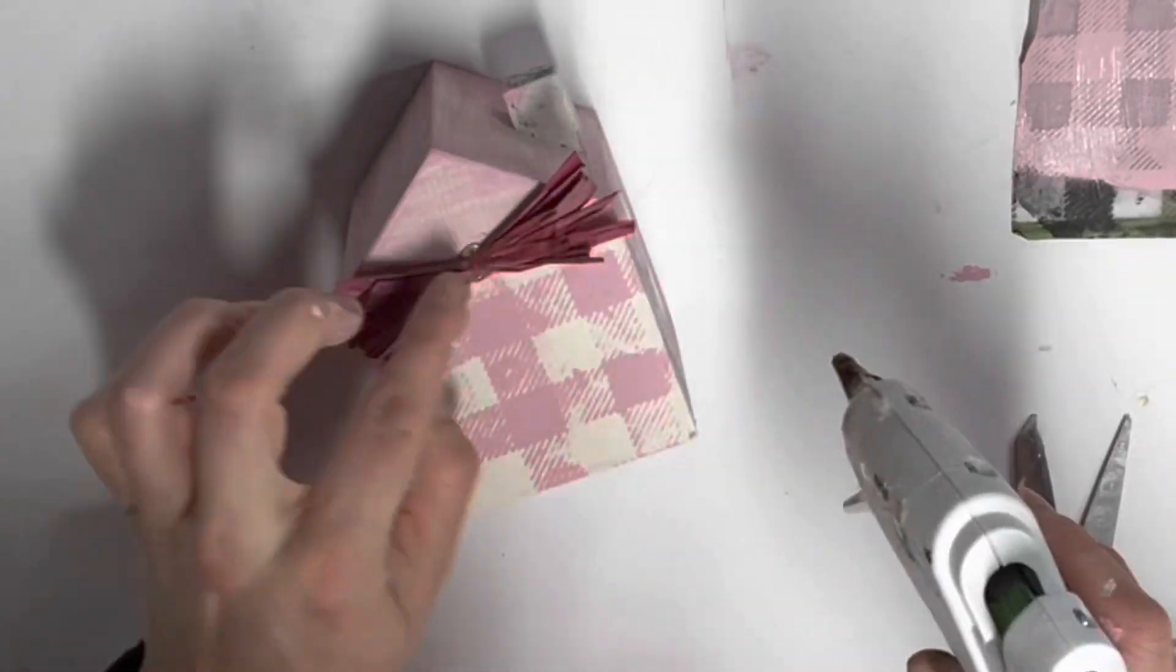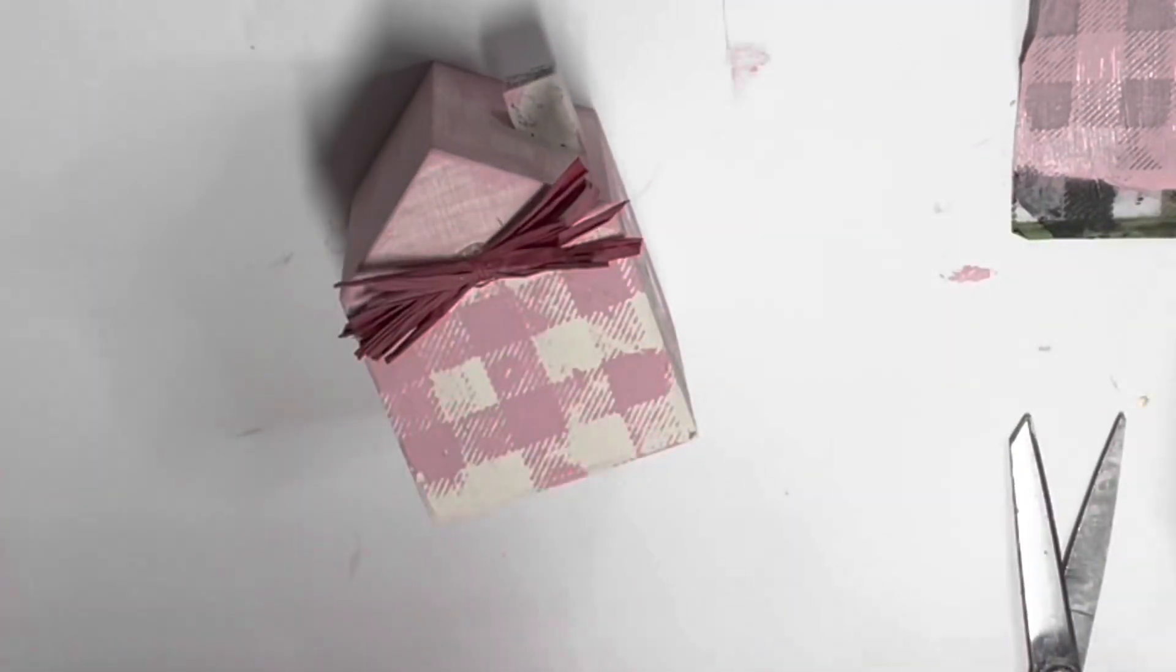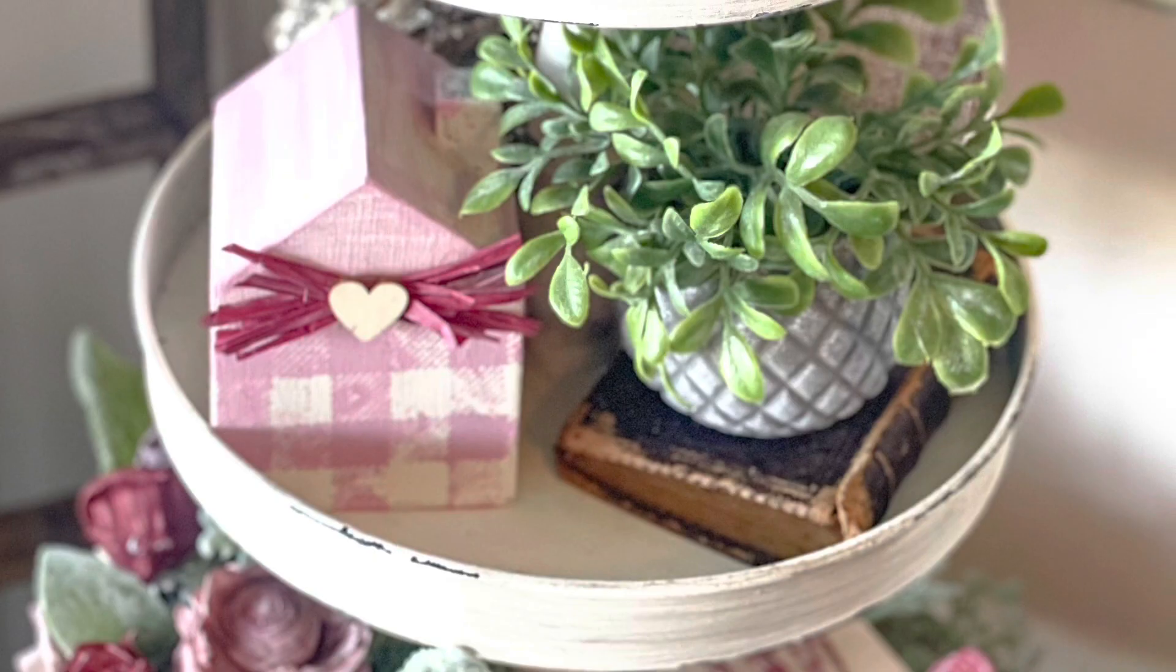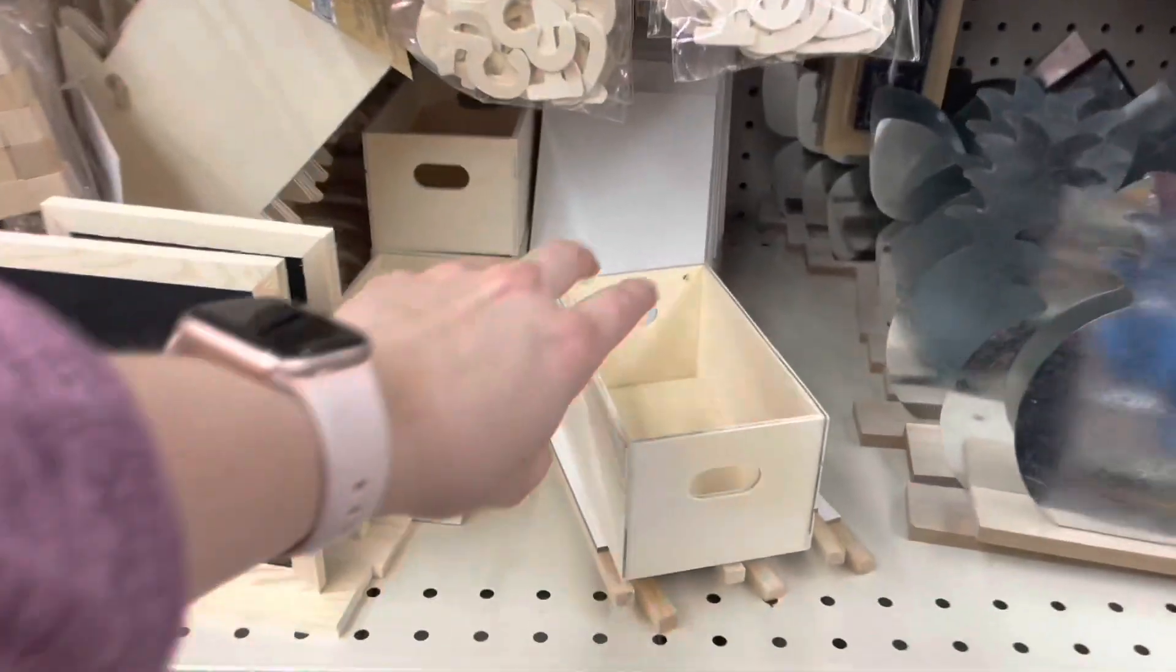And then here I took some raffia, pink raffia, and just hot glued a little bow on the front there. And then a little wooden heart from one of those little packets you can get from Dollar Tree. And here's a look at how that one turned out on my tiered tray. I think this might be one of my favorite tiered trays I've ever made.